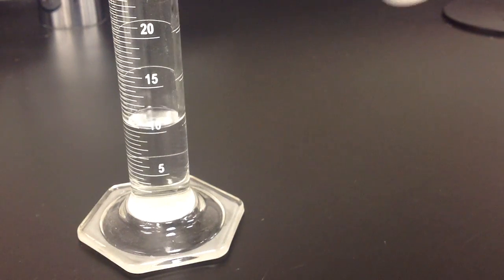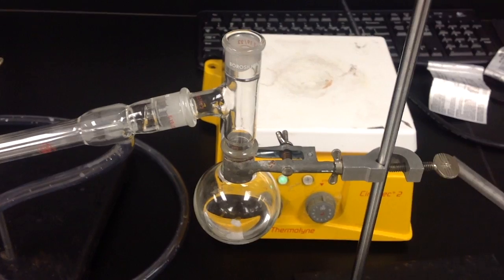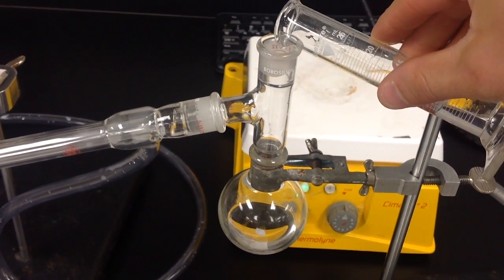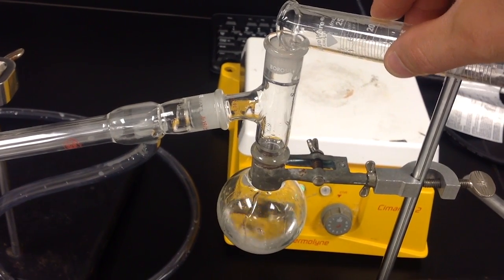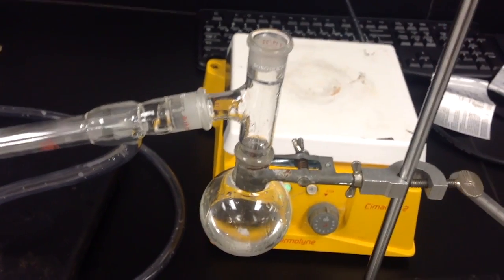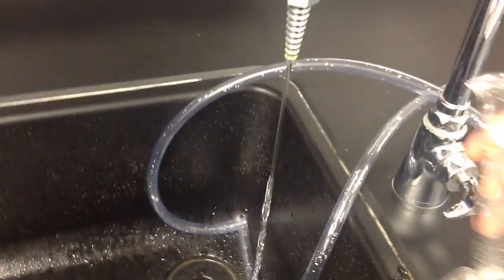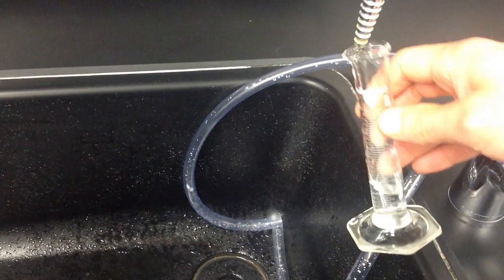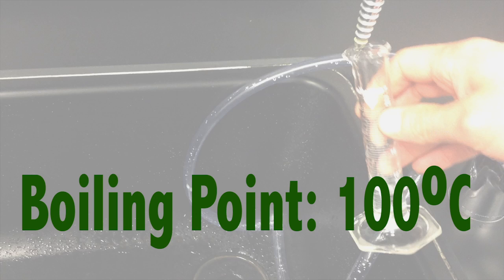Here we add 10 milliliters to a flask. We're going to mix the alcohol with 10 milliliters of water, which has a boiling point of 100 degrees Celsius.